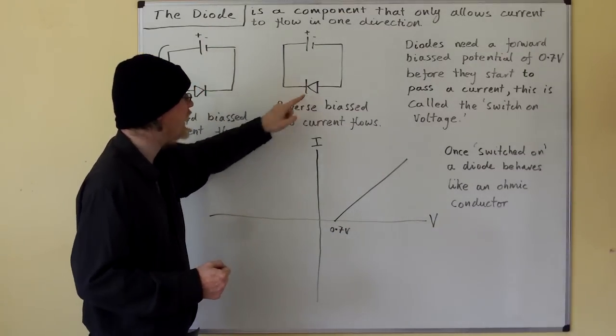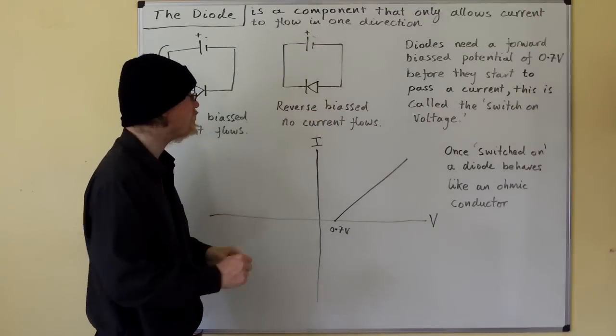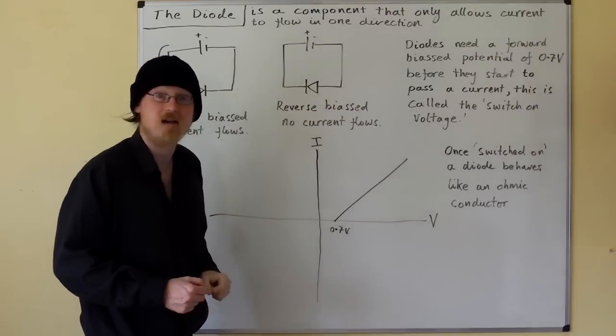Now, this diode here is reverse biased. It's the other way round, and it doesn't allow a current to flow.